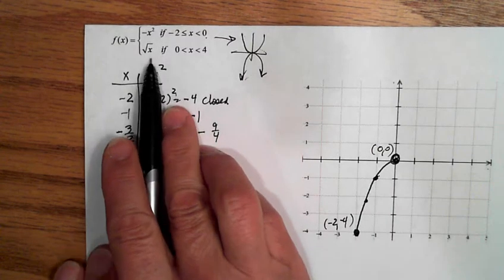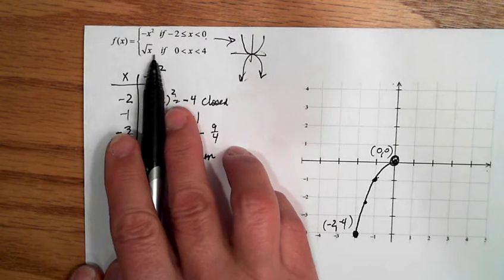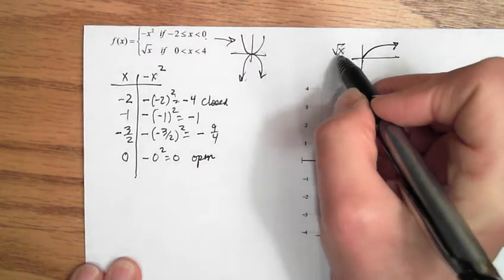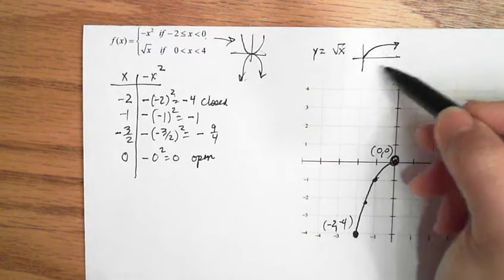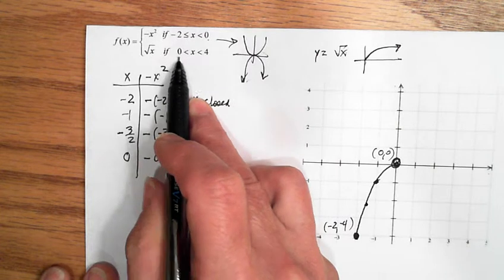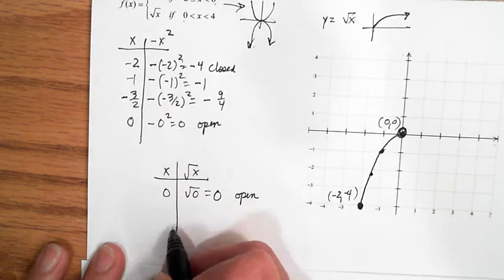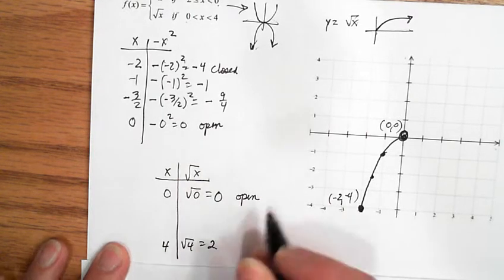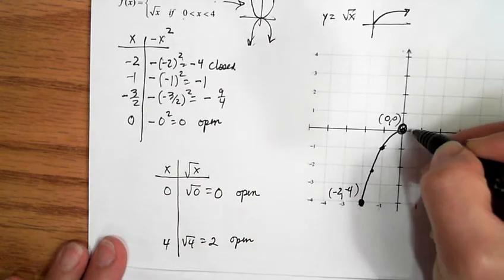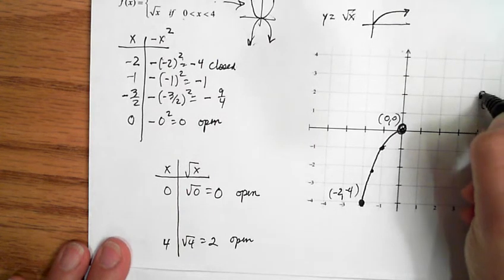The next section is the square root function, which goes from 0 to 4 with both endpoints open. The square root function is one of those parent functions — it looks like half a sideways parabola. At x = 0: √0 = 0, open endpoint at origin. At x = 4: √4 = 2, also open.